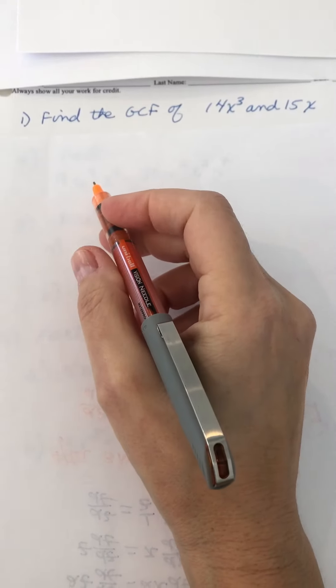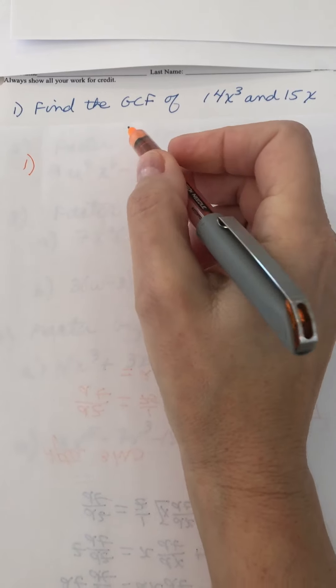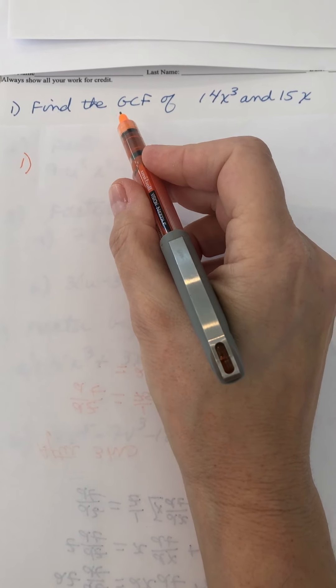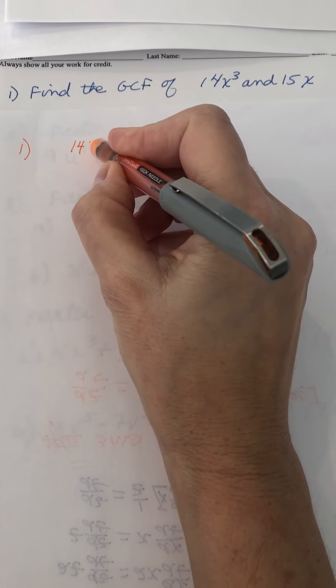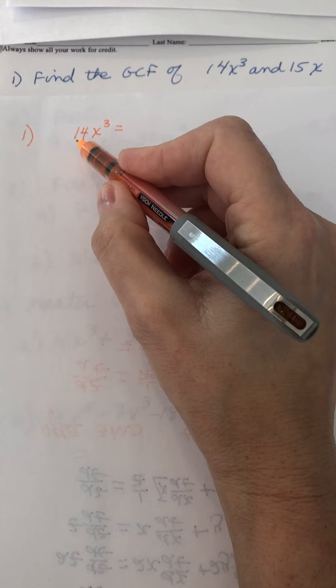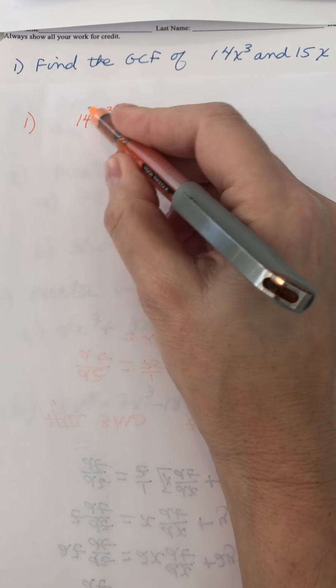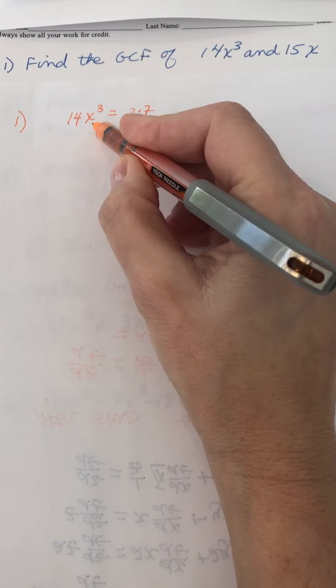Okay, factoring out the GCF. To factor out the GCF, we want to look for the greatest common factor. The idea is you could literally factor completely the number into a product of the prime factors.